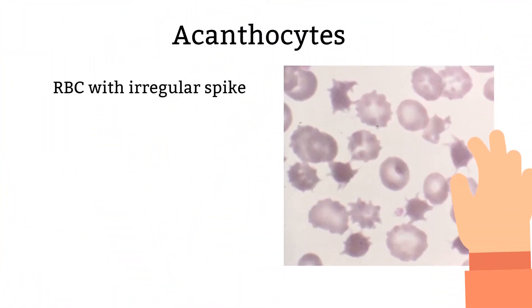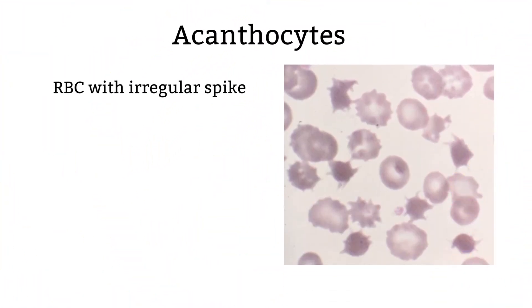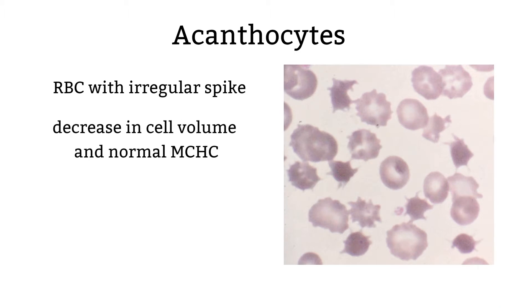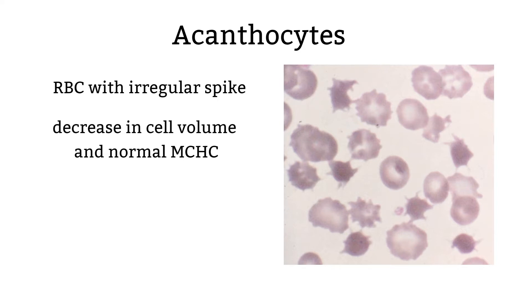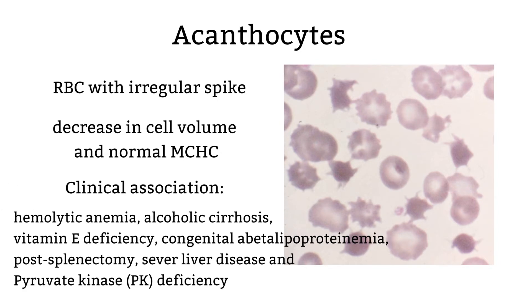Acanthocyte. Acanthocyte is a term used to describe red blood cells with irregular spikes. For this type of morphology, you can see a decrease in cell volumes and a normal MCHC. Here are some diseases associated with this type of morphology.